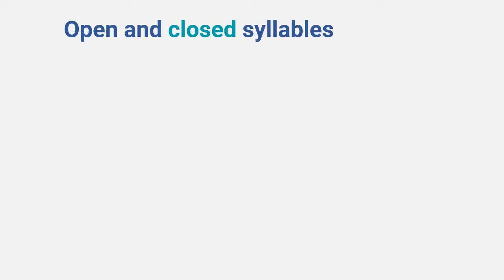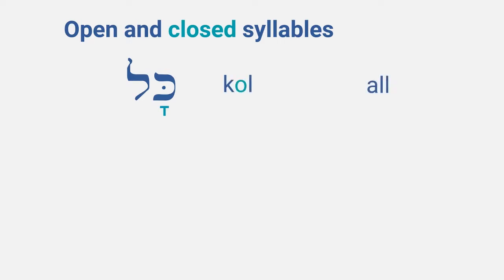So let's look at some examples. First this one — it is a very common word, and it is a single closed syllable, hence a Kametz Gatuf. So you pronounce it as 'kol' and it means 'all.' And interestingly enough, it can also be spelled with a holun.